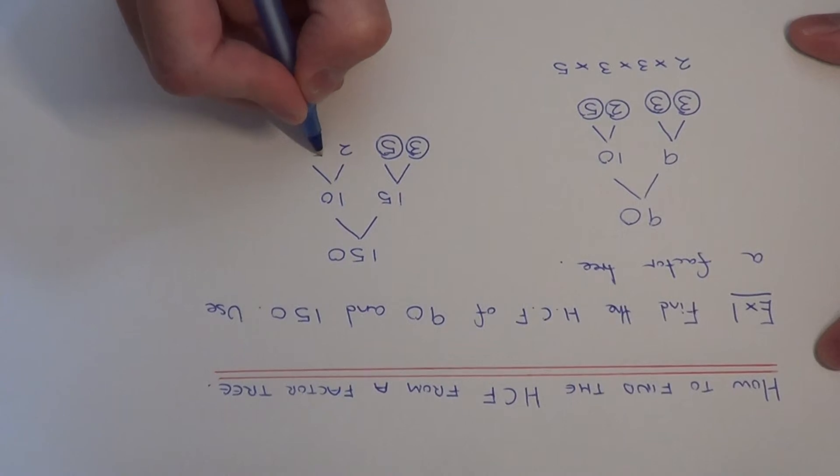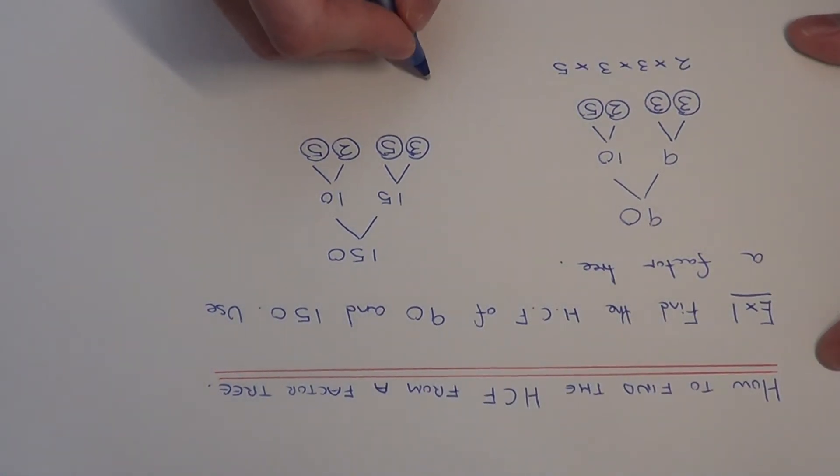10 we can split up into 2 times 5. 2 is prime, 5 is prime. So our product of prime factors for 150 is 2 times 3 times 5 times 5.